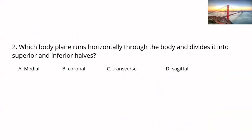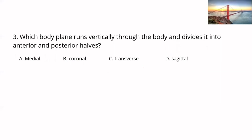Next question: there is only one body plane that runs through the body horizontally, dividing it into superior and inferior — that's the transverse plane, also known as cross-sectional. Question three asks for the body plane that divides the body into anterior and posterior halves. That's the frontal plane, but since that option isn't listed, you look for its other name — coronal. The correct answer is B, coronal.